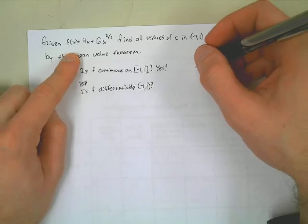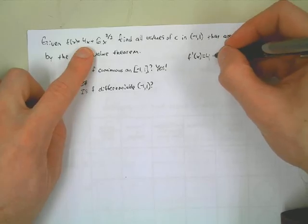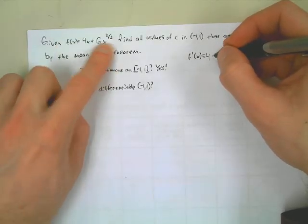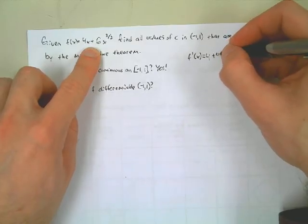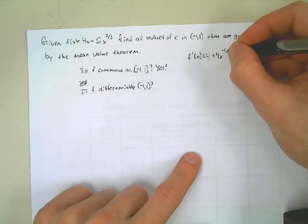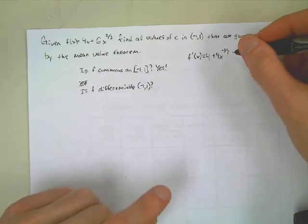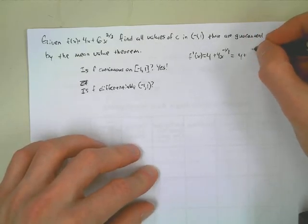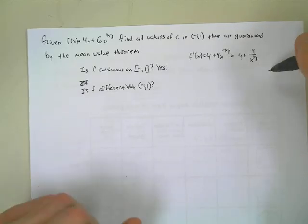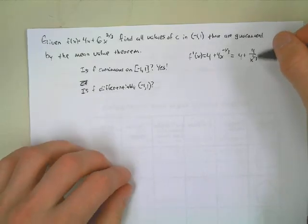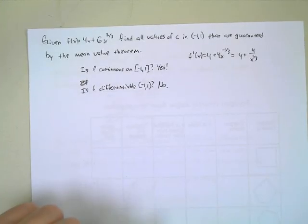Let's take the derivative to confirm. Derivative of 4x is 4. Derivative of 6x to the 2/3: bring the 2/3 down — 6 times 2/3 is 4 — giving 4x to the negative 1/3, which is 4 over x to the 1/3. The problem value is x = 0, which is in the interval (-1, 1). So the mean value theorem does not apply on [-1, 1].